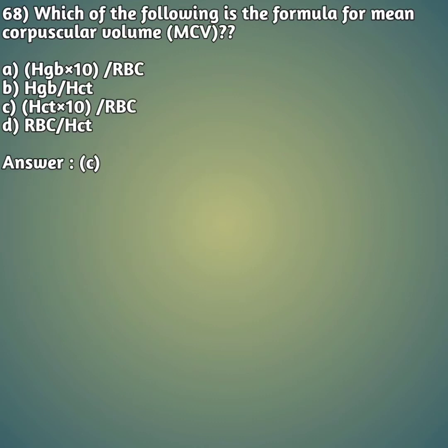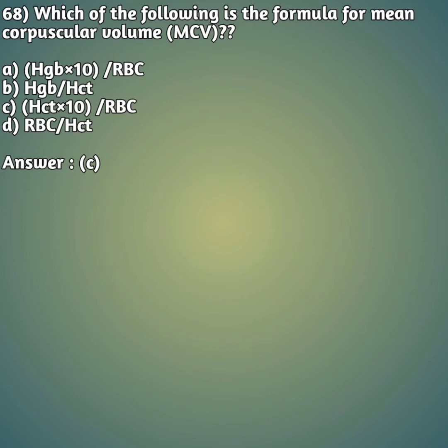Moving on to our 68th question: which of the following is the formula for mean corpuscular volume (MCV)? Option A: HB × 10 / RBC. Option B: HB / HCT. Option C: HCT × 10 / RBC. Option D: RBC / HCT. You need to remember the formulas for MCV, MCH, and MCHC - these are all called red cell indices. The right formula for MCV is option C: HCT × 10 / RBC.